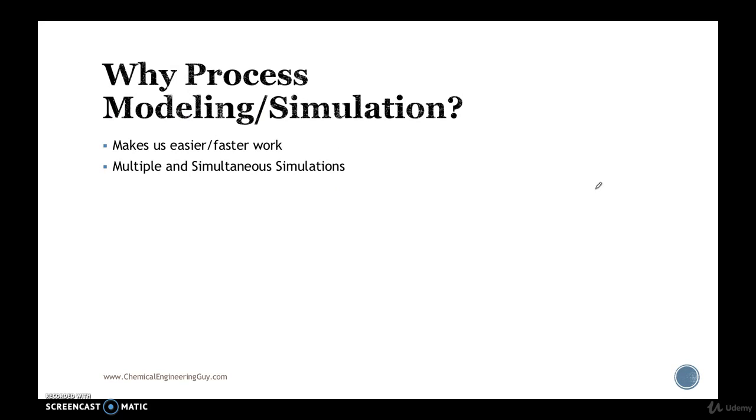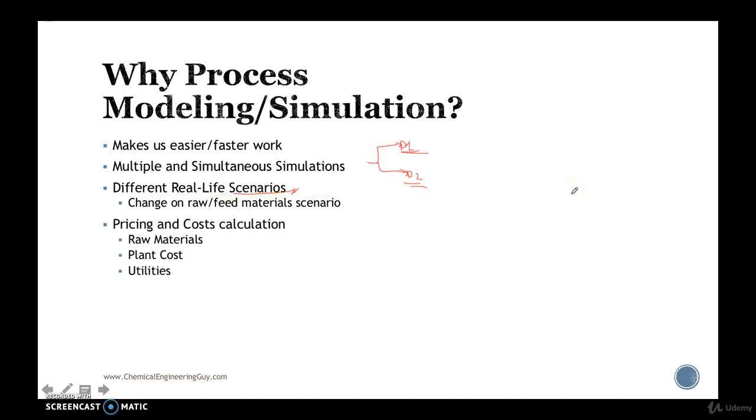Now you can check out multiple simultaneous simulations. That is, you can get, for instance, the simulation of plant one and simulate plant two at the same time without actually connecting them so you can work simultaneous processes at the time. Now you can also be actually modeling real-life scenarios. So the example in which you needed to change temperature of the reactor or the feed of the provider is not good enough. You can change the raw materials and so on.